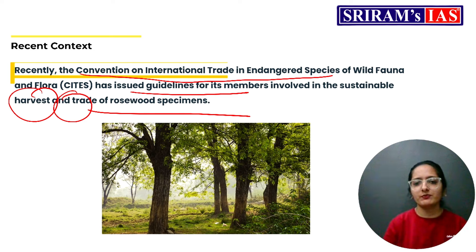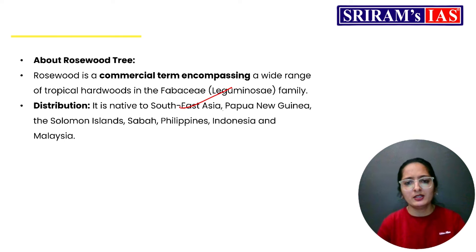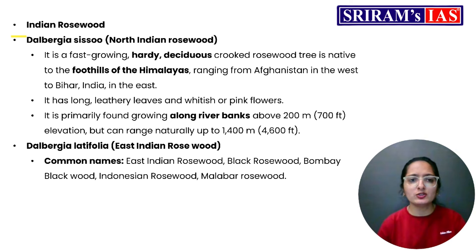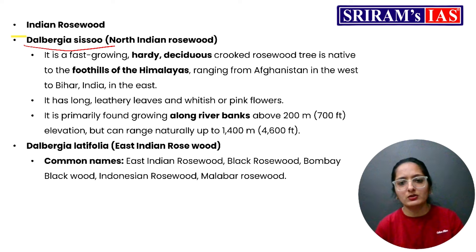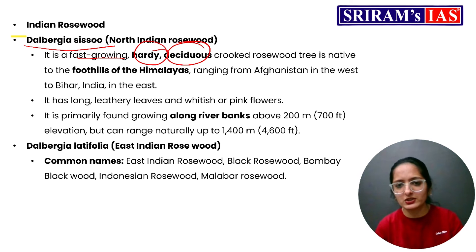The Rosewood tree is a tropical hardwood. In Indian rosewood, these trees are found in the tropical areas of Asia and the Pacific islands. North Indian rosewood is known as Dalbergia Sissoo. These trees grow very quickly — they are fast-growing, hard, very tough, and deciduous, meaning they lose their leaves seasonally. They also have a crooked shape.